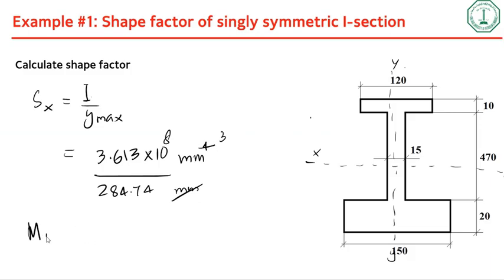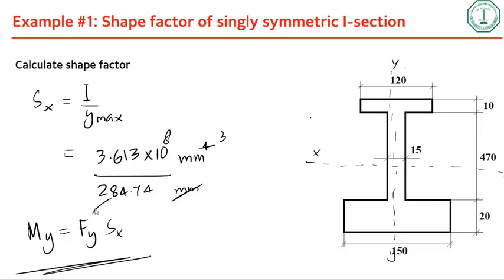To find My, multiply Fy times Sx. For example, if Fy is given as 50 ksi, just multiply 50 ksi by the calculated Sx value to get the yield moment.